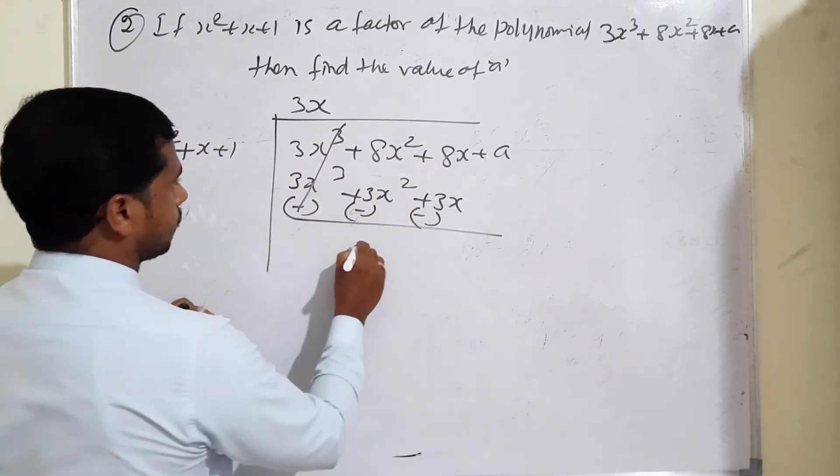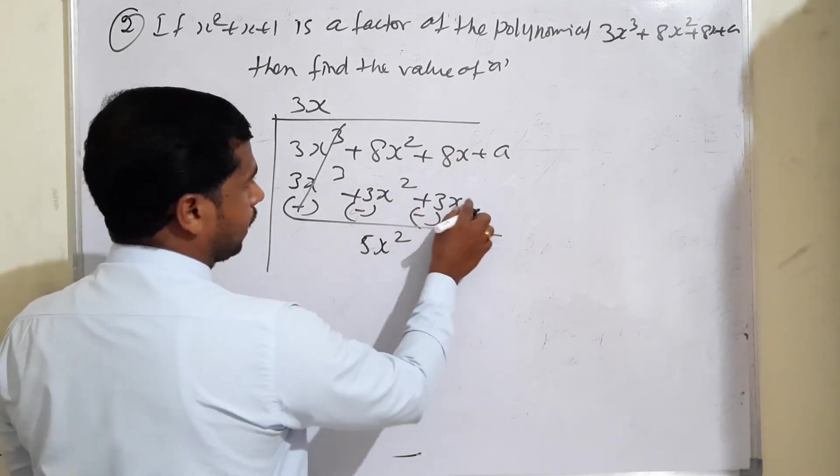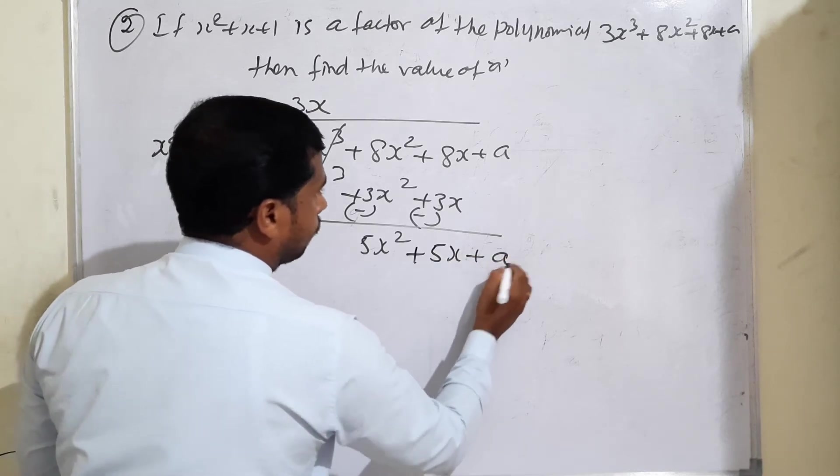Remaining: 8x² minus 3x² gives 5x². Next, 8x minus 3x gives 5x, plus a.